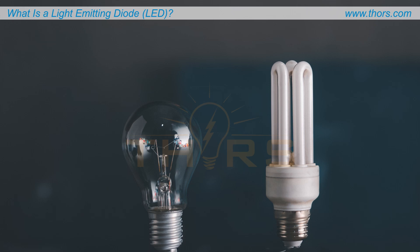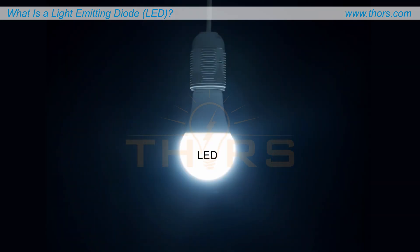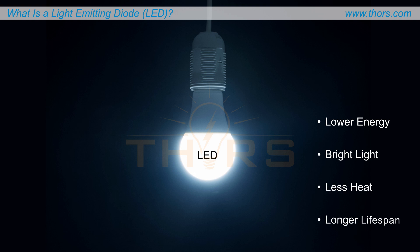Before the advent of LEDs, conventional light sources, such as incandescent and fluorescent lamps, were used for over 100 years. LEDs use substantially lower energy to produce bright light with less heat and have a longer lifespan when compared to conventional light sources.